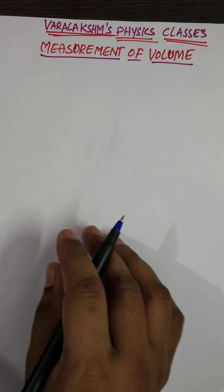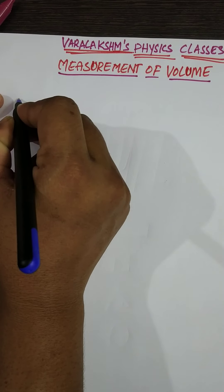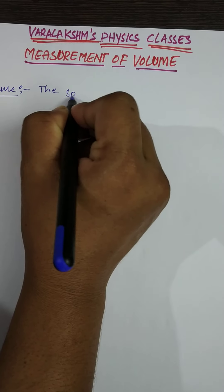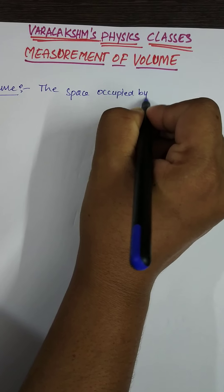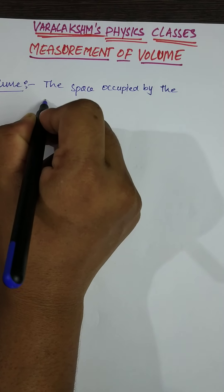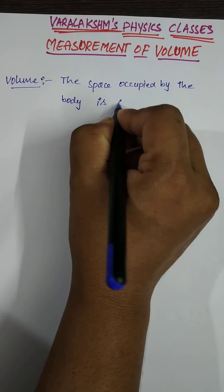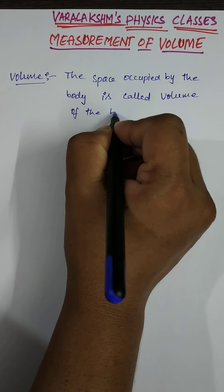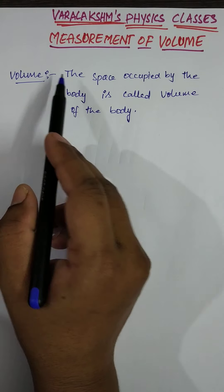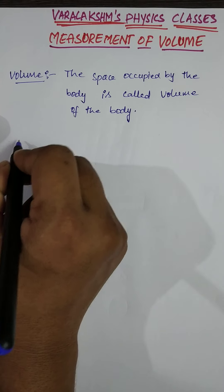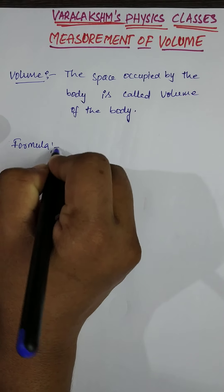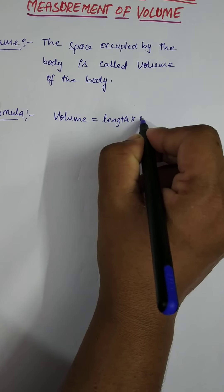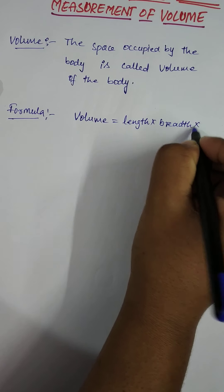In this video we are going to learn about measurement of volume. The definition of volume is: the space occupied by a body is called the volume of that particular body. The formula for volume is: Volume = Length × Breadth × Height.